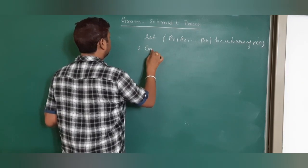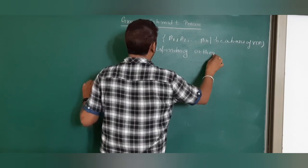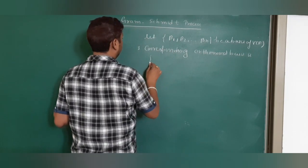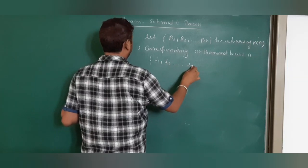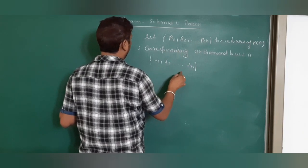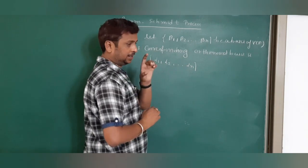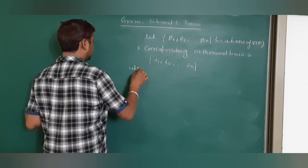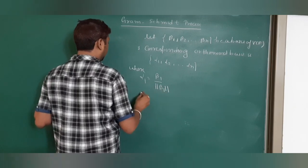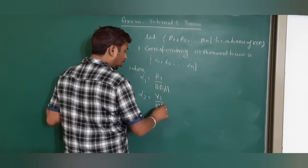The corresponding orthonormal basis is alpha 1, alpha 2, ... alpha m, because the number of elements in a basis of V must be equal. Our work is to calculate alpha 1, alpha 2, ... alpha m. Alpha 1 is nothing but beta 1 upon norm of beta 1. Alpha 2 is gamma 2 upon norm of gamma 2.